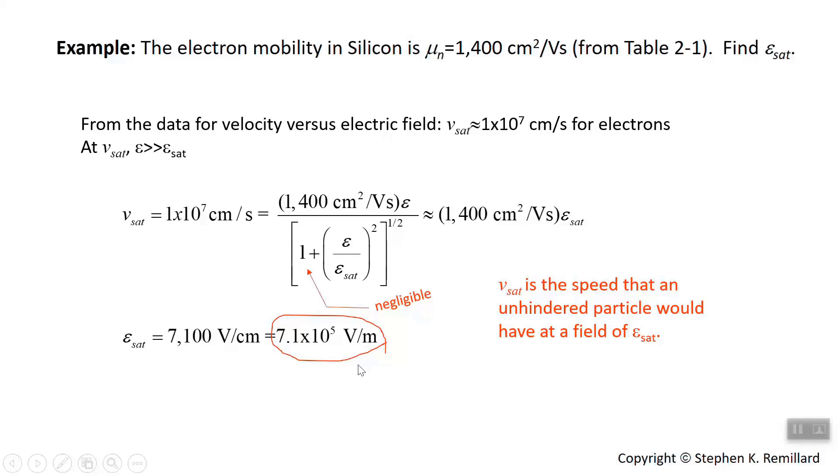Typically, most people think in terms of volts per meter for electric field, but in this course we do use volts per centimeter, so I should probably have circled that one instead. It needs some explanation. So V_sat, saturation velocity, is the speed that an unhindered particle would have at a field of E_sat.